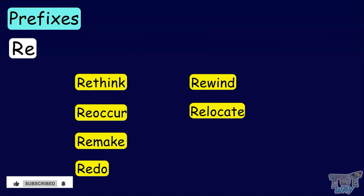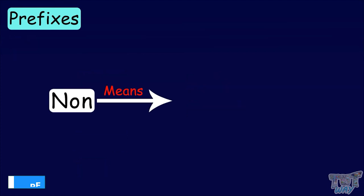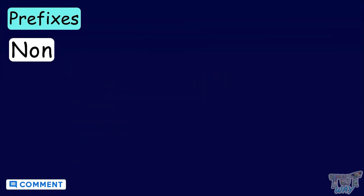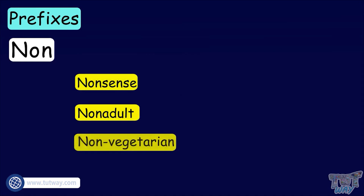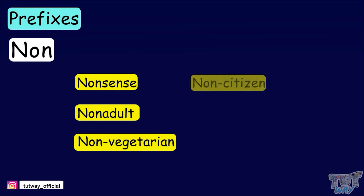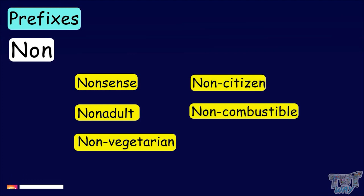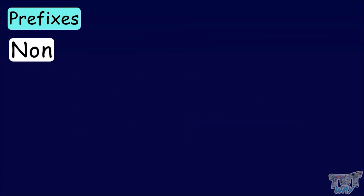Now we have a prefix, non, which means not, or without. Let's think of some words that begin with non: nonsense, non-adult, non-vegetarian, non-citizen, non-combustible, non-compatible. There can be many such examples.